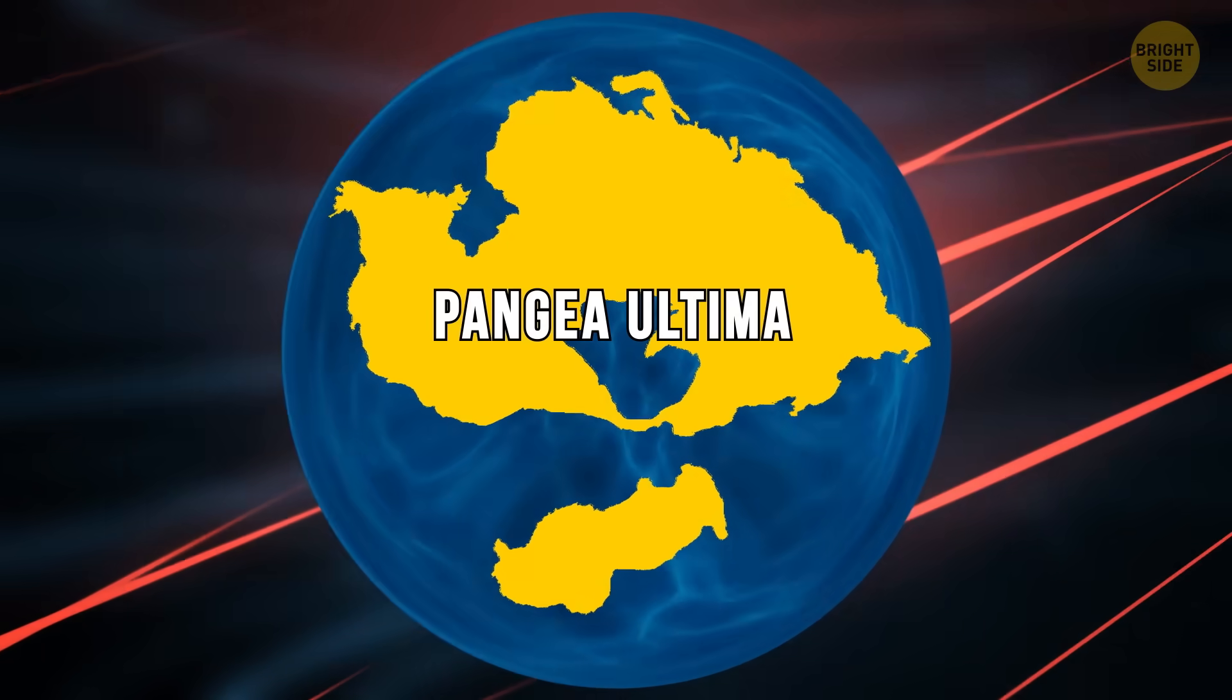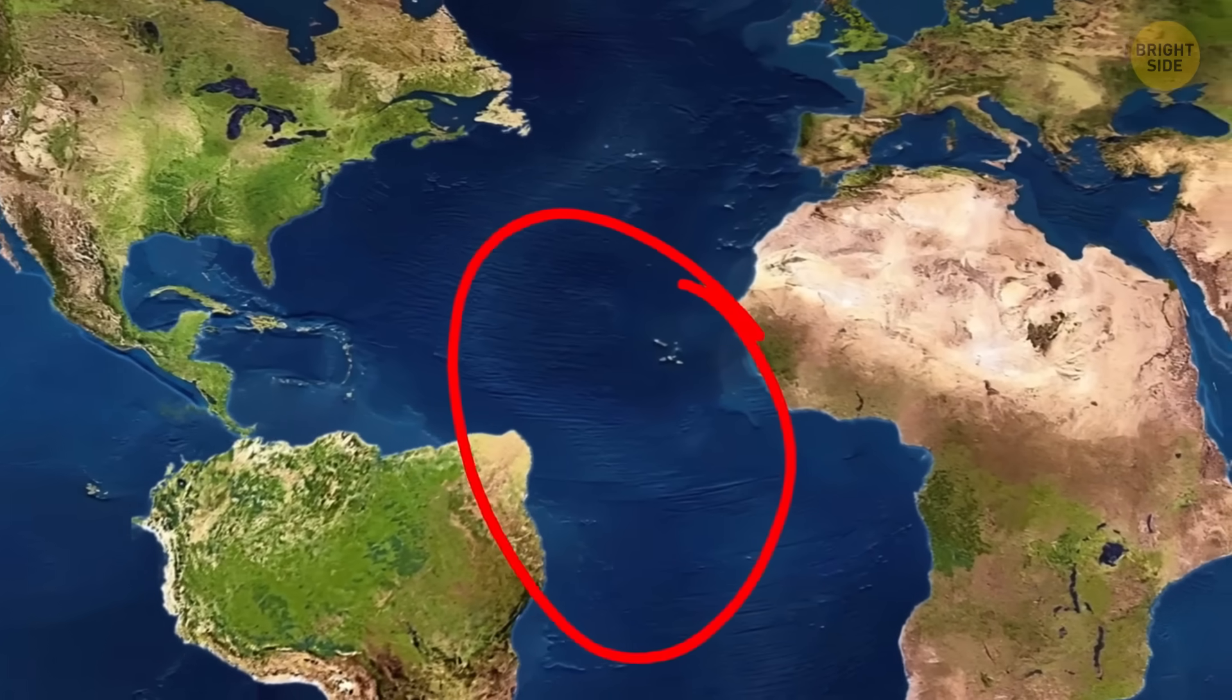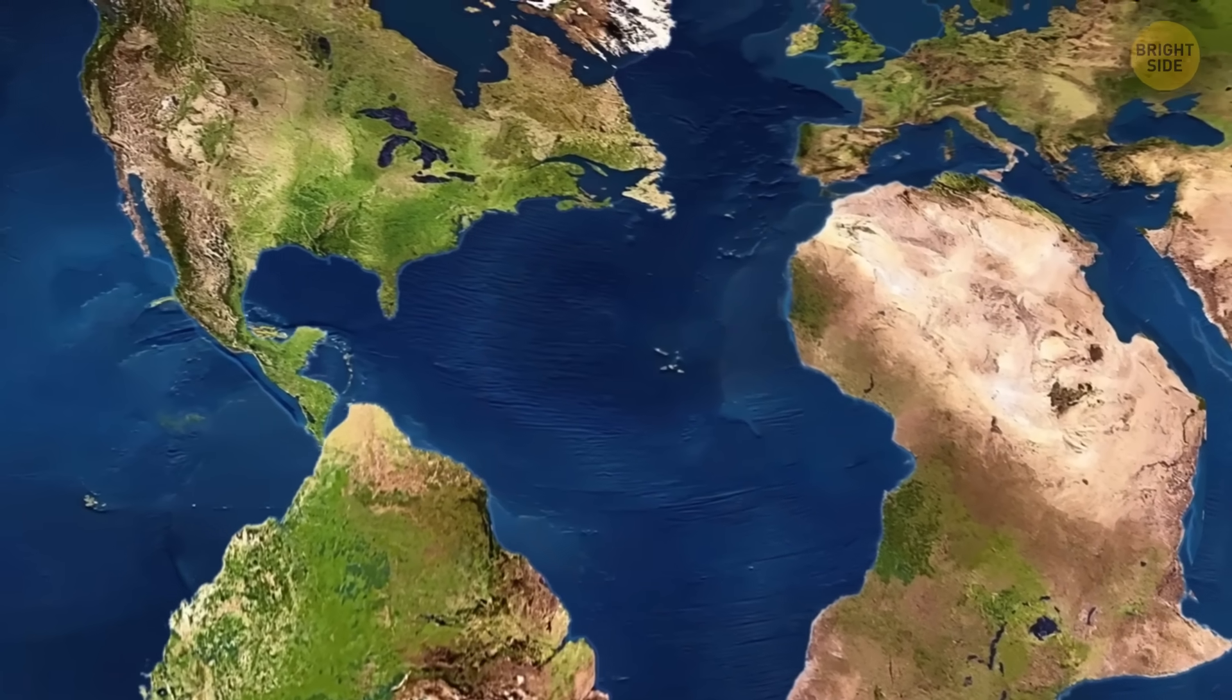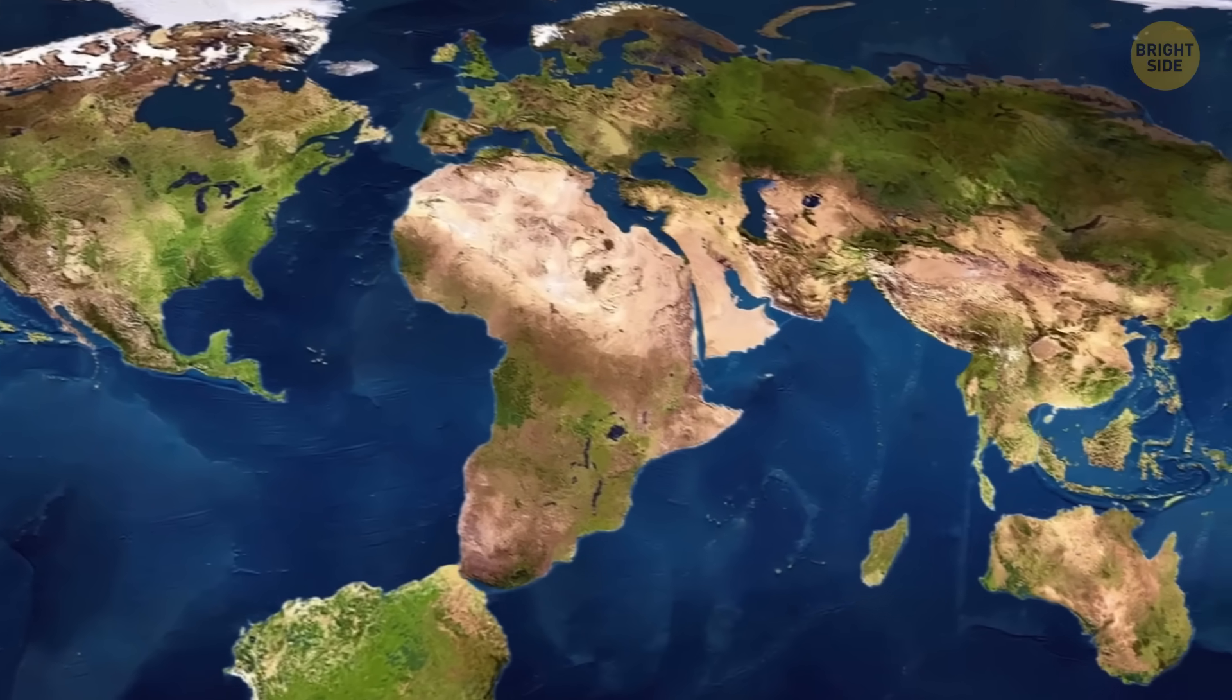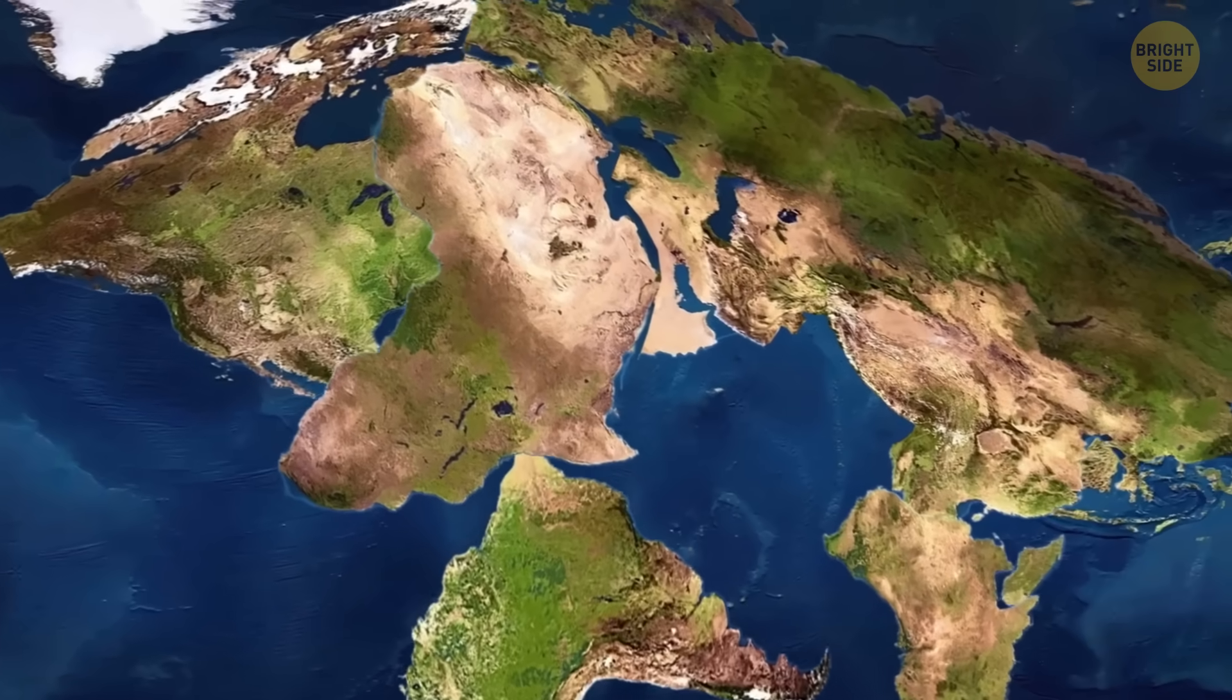Next, Pangaea Ultima. In the future, the Atlantic Ocean might get tired of being so wide. It might decide to slow down and shrink a bit. The Americas and the northward-drifting Antarctica will probably crash into Africa and Europe. And just like that, a brand-new supercontinent forms.